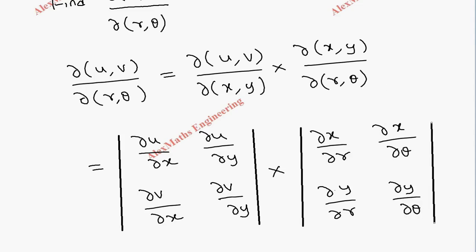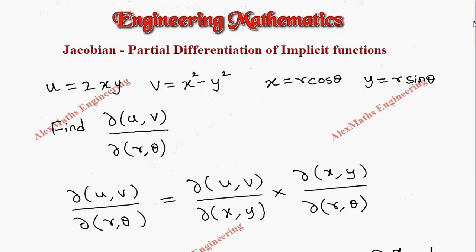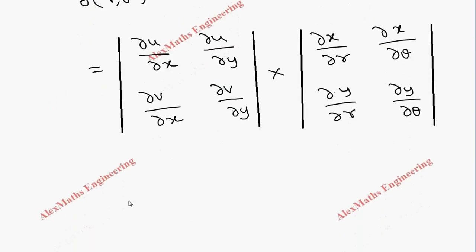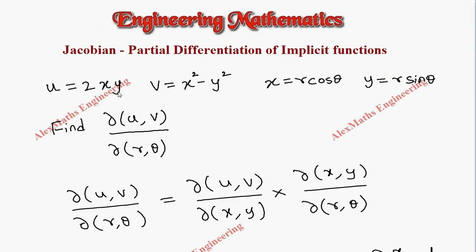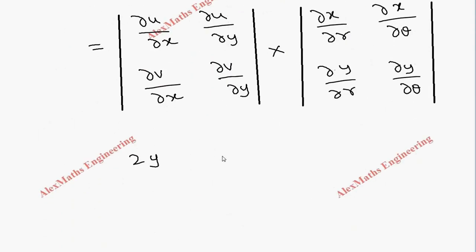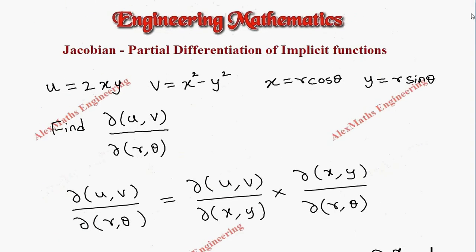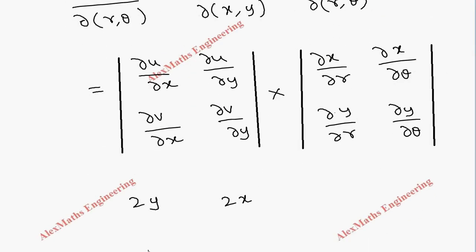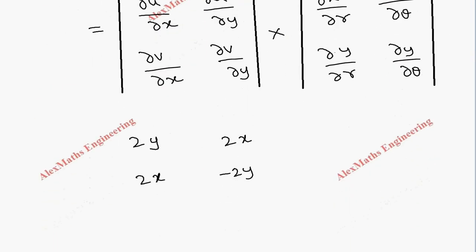Now let's substitute each value. ∂u/∂x: differentiation of x is 1, so the constant remaining is 2y — first term is 2y. Then ∂u/∂y: differentiation of y is 1, the constant is 2x — so it is 2x. Then partial differentiation of v with respect to x: y is constant, so differentiation of x² gives 2x. And ∂v/∂y gives −2y, since differentiation of y² is 2y with a minus sign. So we have completed the first determinant elements.